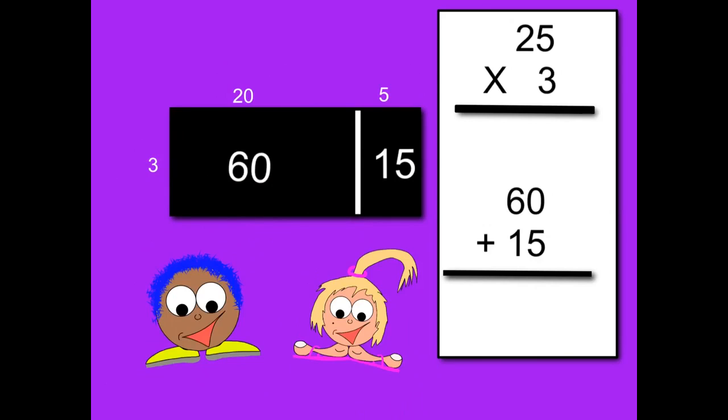Okay, so all we need to do now is add those two areas together. So 0 plus 5 is 5, and 6 plus 1 is 7. Oh, I get it. So if we go back to that original question, then 25 times 3 is 75.